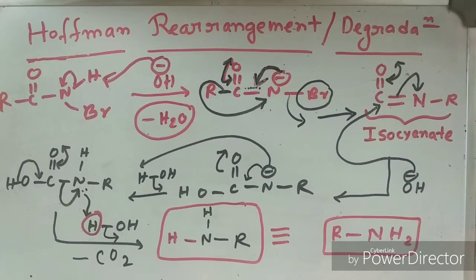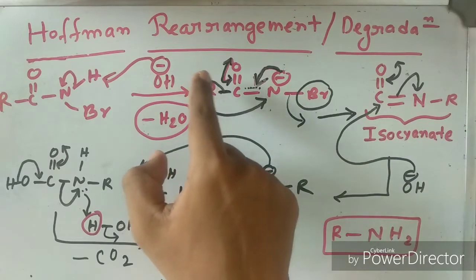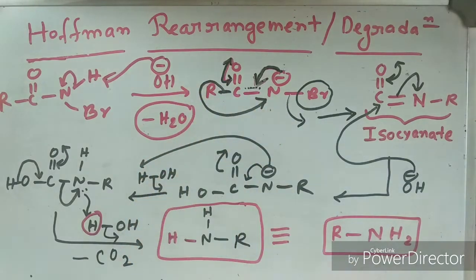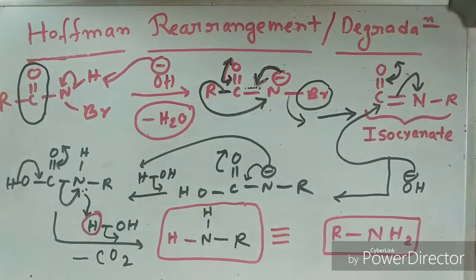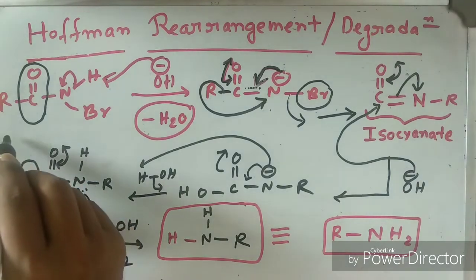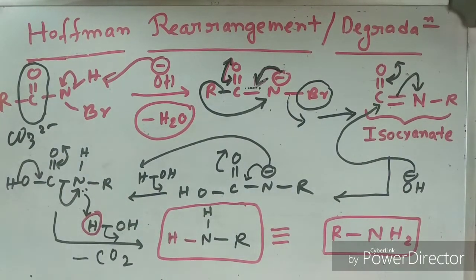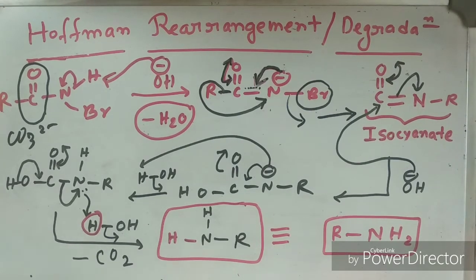This reaction is overall called the Hoffman rearrangement or Hoffman degradation. Why rearrangement? Because the R group rearranges or migrates from carbon atom to nitrogen atom. Why degradation? Because the CO leaves the system as CO₃²⁻. That is why it is called rearrangement or degradation — both terms refer to the same reaction.